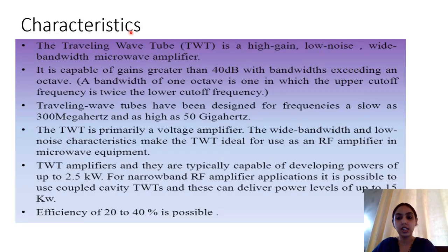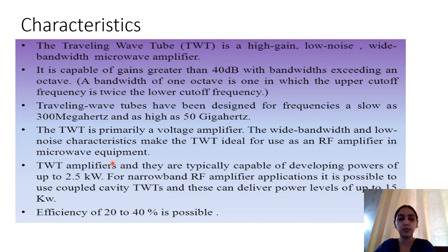The traveling wave tube is a high gain, low noise, wide bandwidth microwave amplifier. Compared to the klystron, it has a higher bandwidth and is capable of gain greater than 40 dB with bandwidth exceeding an octave. TWTs have been designed for frequencies ranging from 300 MHz to 50 GHz. They find application as RF amplifiers in microwave equipment and can develop power up to 2.5 kilowatt, while coupled cavity TWTs can deliver power levels up to 15 kilowatt. The efficiency of the traveling wave tube is stated as 20 to 40 percent.